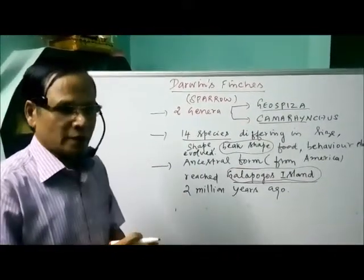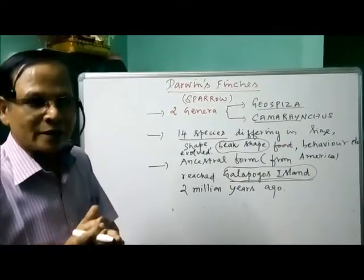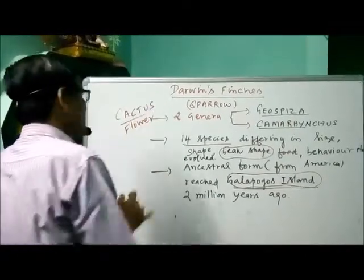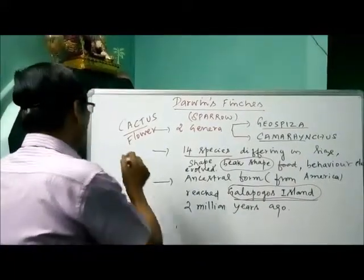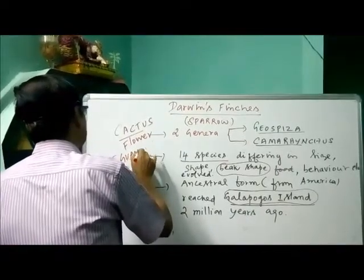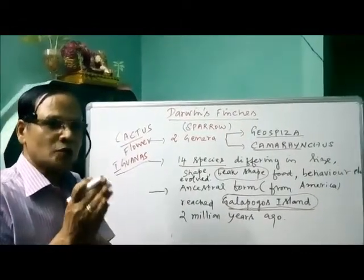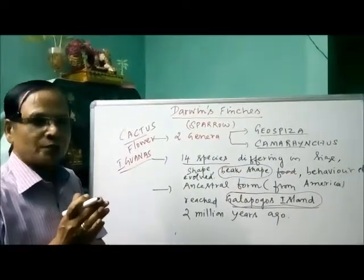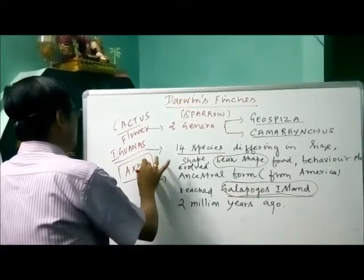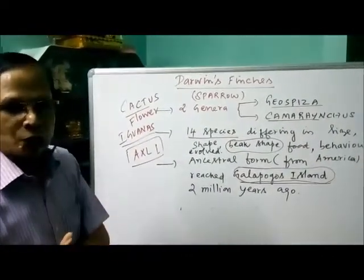They have different food resources: maybe insects, seeds, or nectar collected from cactus flowers, or sucking blood from iguanas. A change in beak shape is correlated with a gene called AXL1. This gene is present in the DNA of Darwin's finches and is related to beak shape. The ancestral form was a nut eater, and from this nut eater, the different types of finches evolved.